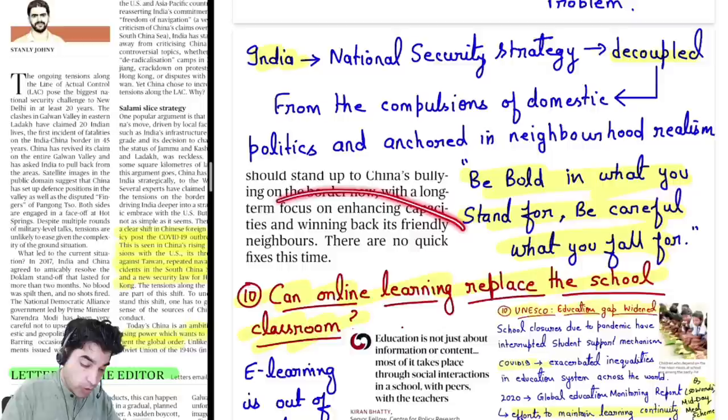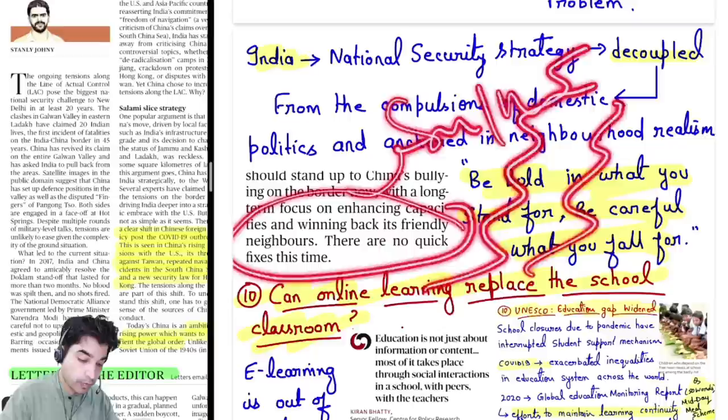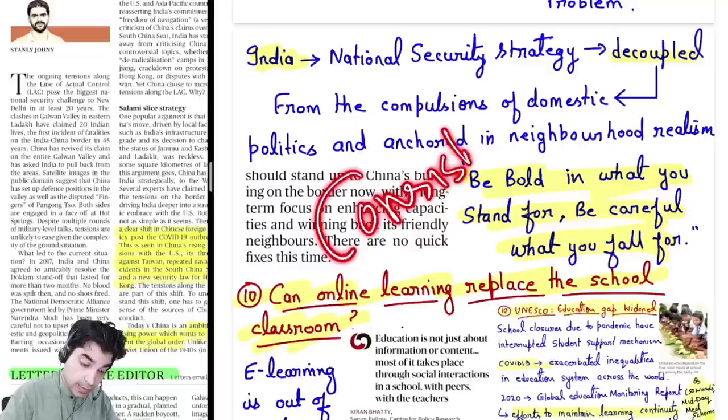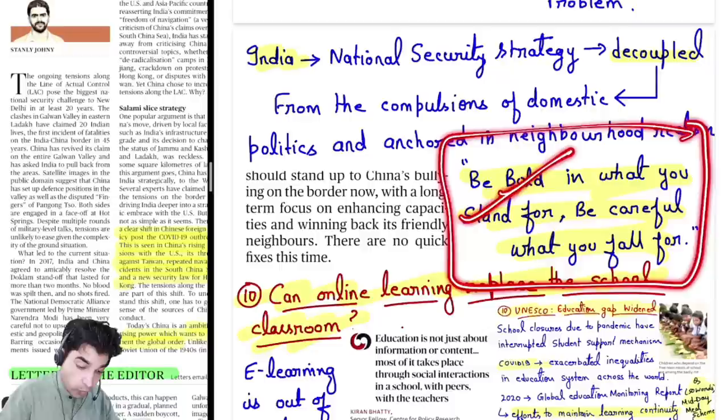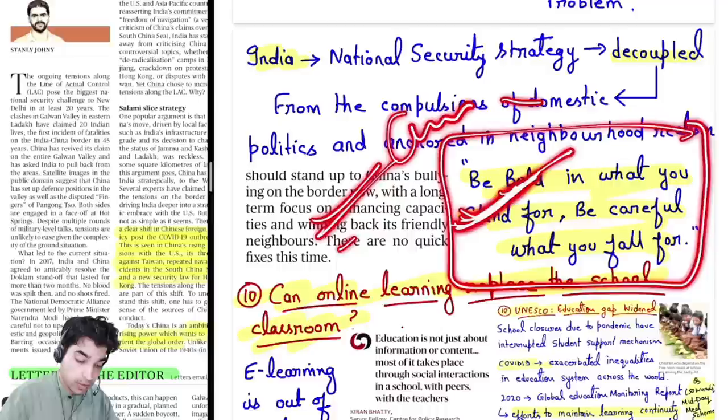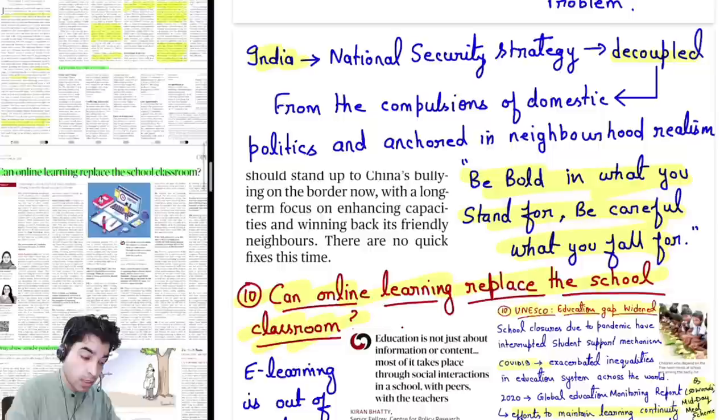China's bullying on the border should not be feared at all — it must be dealt with very firmly. No doubt China is a strong country, but we are also strong and can do it. Be bold in what you stand for, be careful what you fall for. There are no quick fixes here — gradually we will work on this, and slowly we will reach a self-reliant and strong position. Consistency is very important — consistent efforts to grow and become self-reliant.